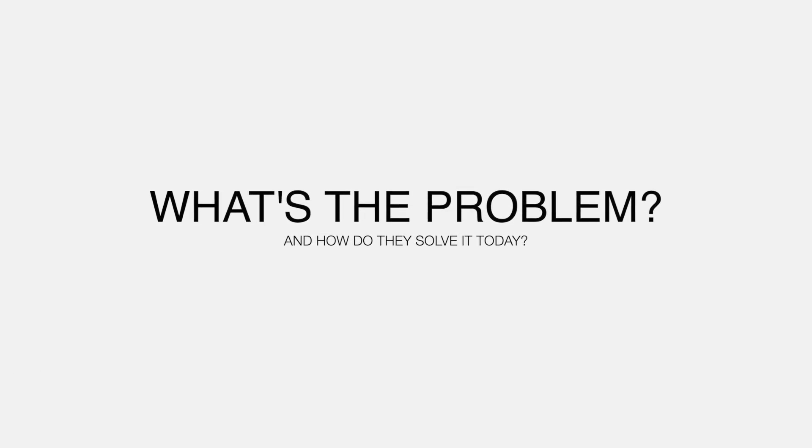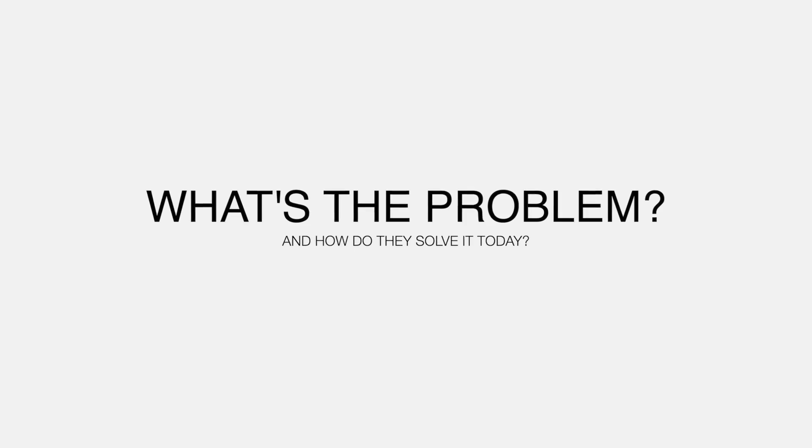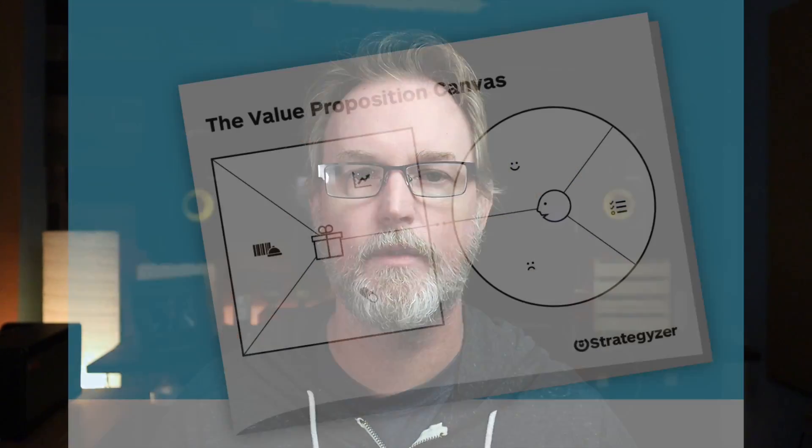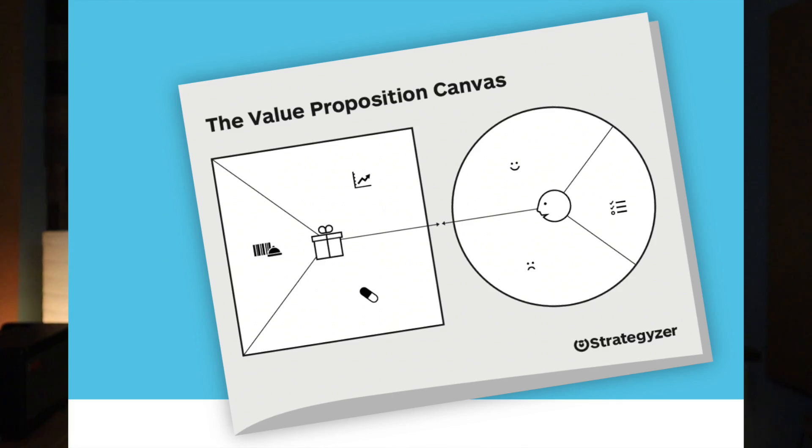The first thing is think about the problem that you want to solve for the customers you expect to have this problem, and also think about how do they solve this today. There's a great little tool called the Value Proposition Canvas that talks about pains and gains. Pains are problems that a customer has, and the gains will be what they would gain from using your solution.